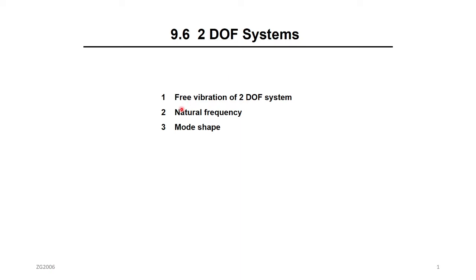We're going to focus only on one example, which is a free vibration — no external force. We will derive the natural frequency and mode shapes. Natural frequency and mode shapes are the eigenvalues and eigenvectors that you've seen in math, in calculus or the differential equations course. Simply, the eigenvalues and eigenvectors are what we call natural frequencies and mode shapes.